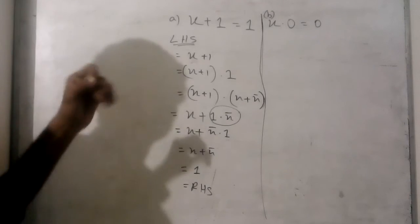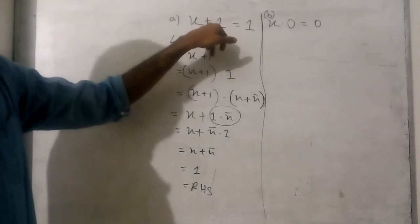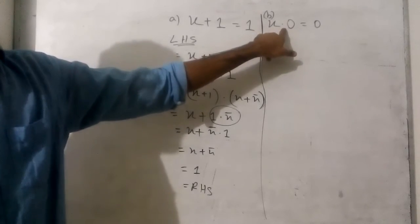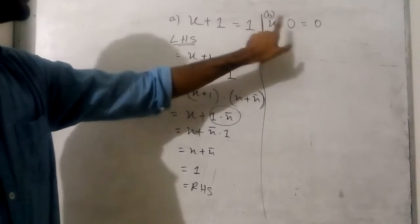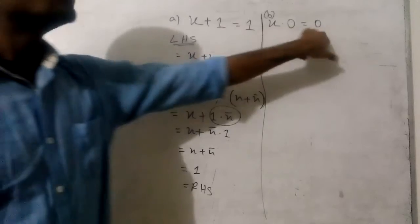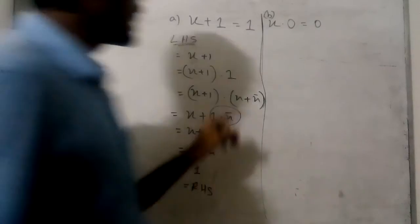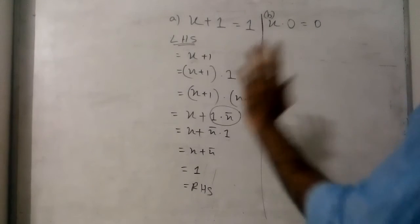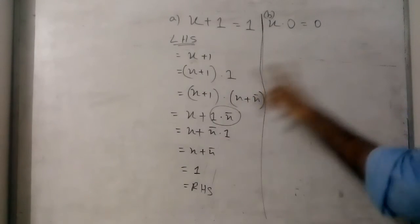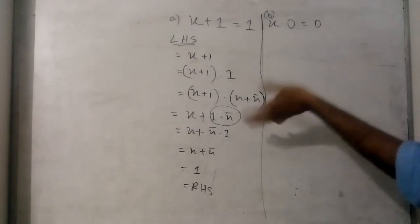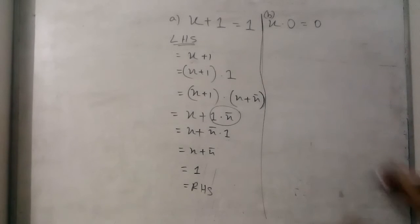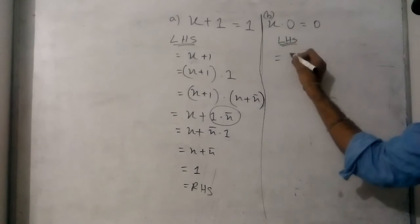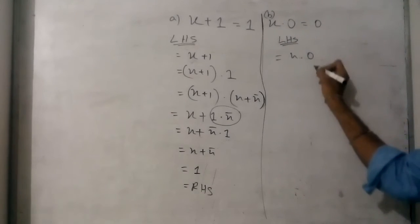Because x plus 1 equals 1 here, and by the principle of duality we can change the plus value into multiply and 1 into 0. So all the rules here — the principle of duality — will be applied. Now LHS is x into 0.